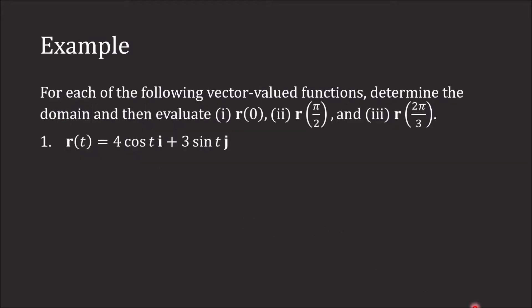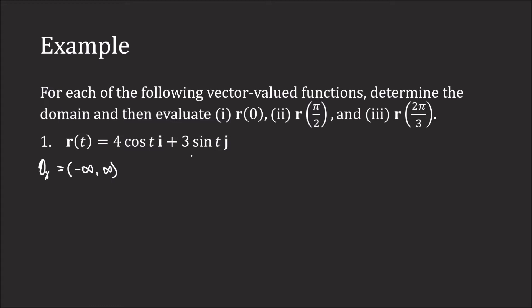For each of the following, we are going to determine the domain and then evaluate at 0, π/2, and 2π/3. First we have the function 4cos(t)i + 3sin(t)j. The domain for the x component, cosine, is all real numbers. And the domain for the y component, sine, is also all real numbers. So the domain for r will also be all real numbers. The domain of the vector-valued function must be such that every single component is defined.